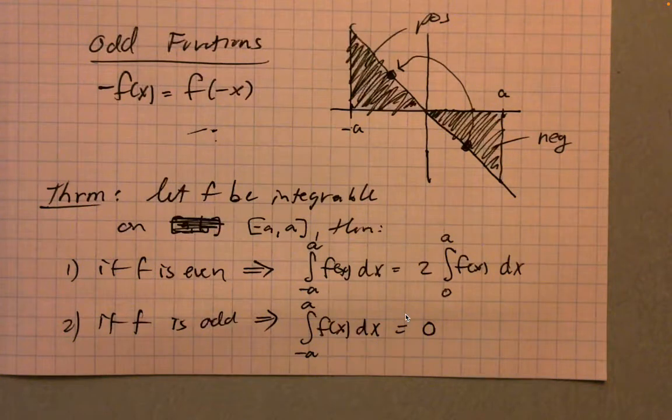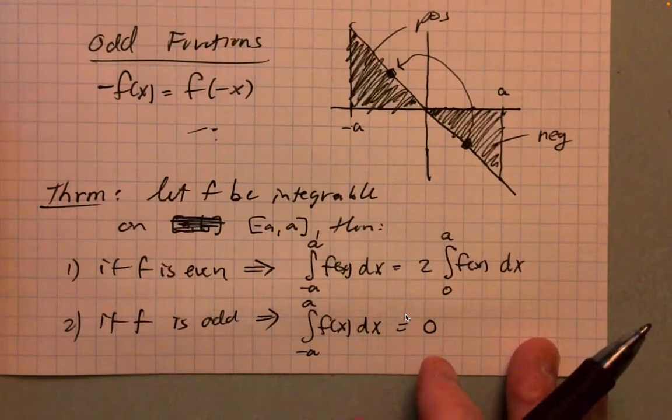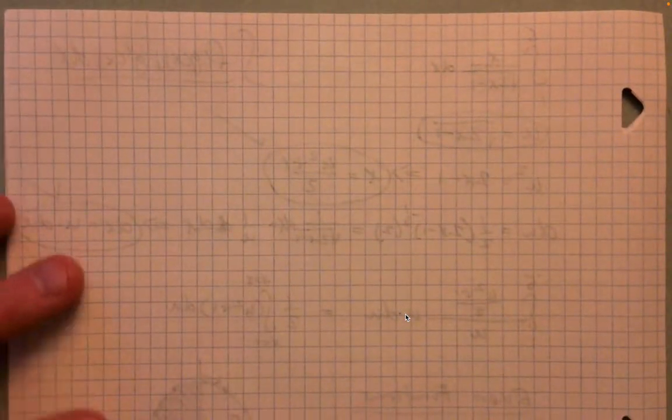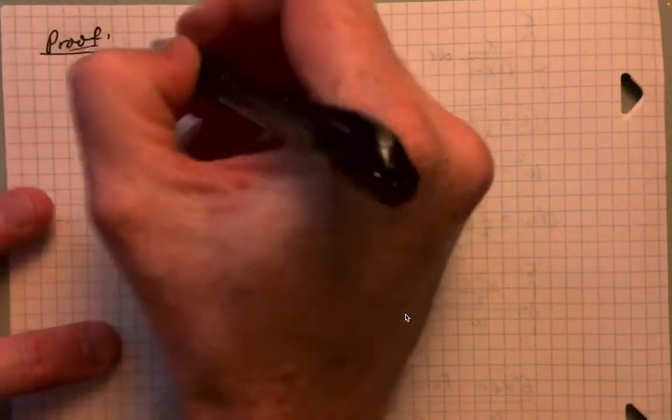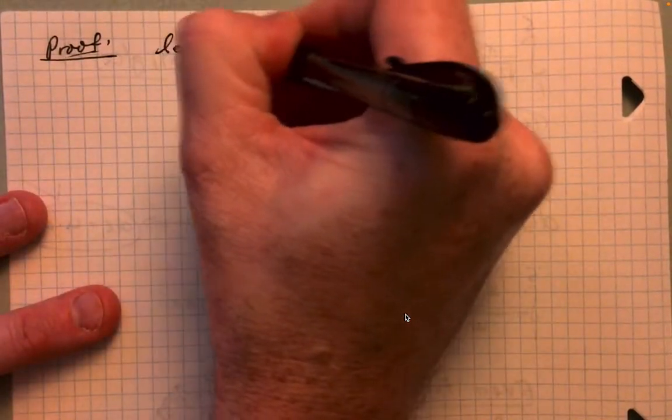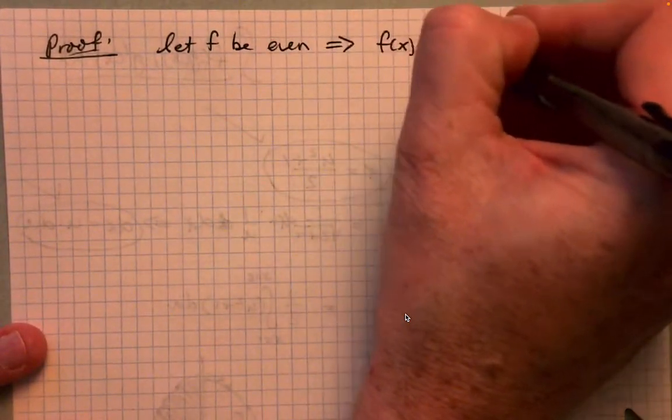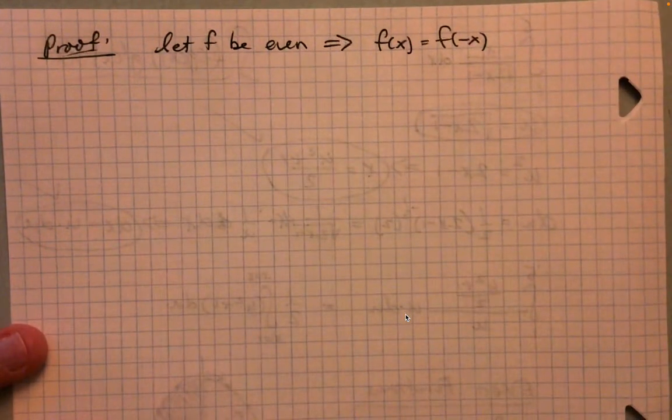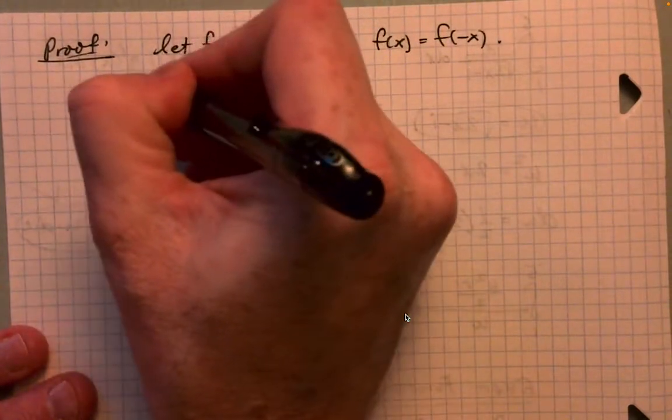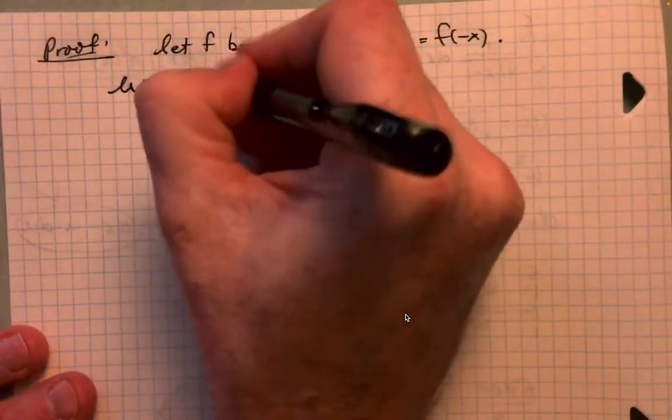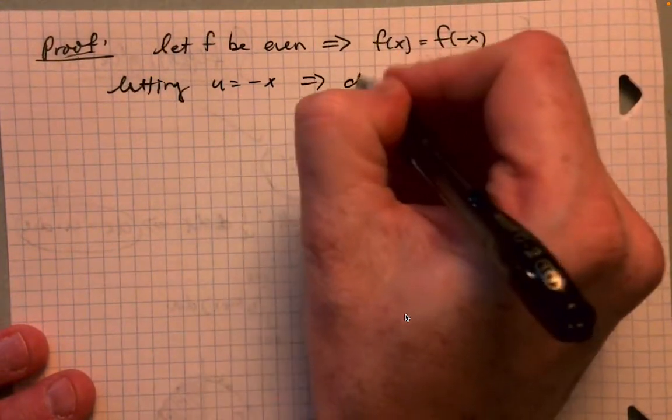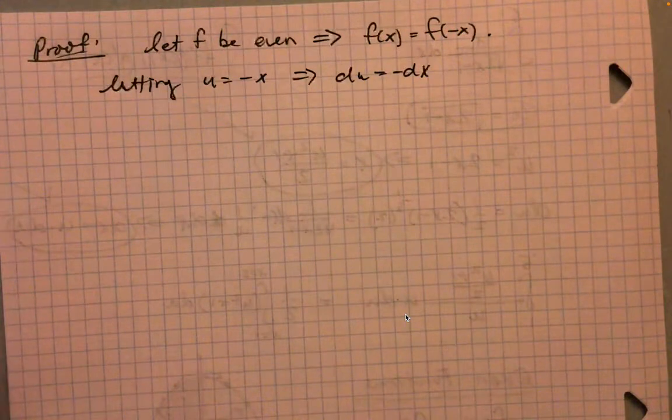So let's go ahead and prove this. Let's just prove the even one. We'll prove the even side of the expression. So proof: let f be even. Then f of x equals f of negative x. Letting u equal negative x, we have du equals negative dx. So we're doing a u substitution here.